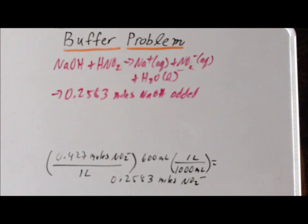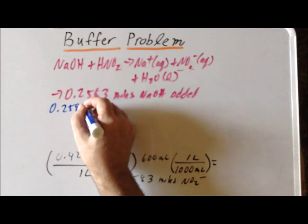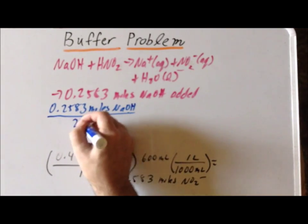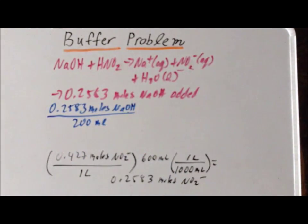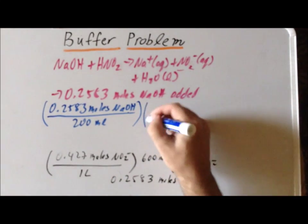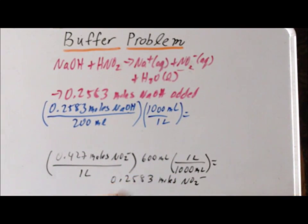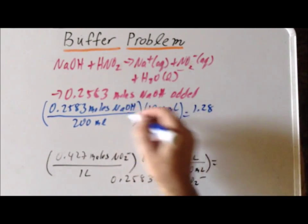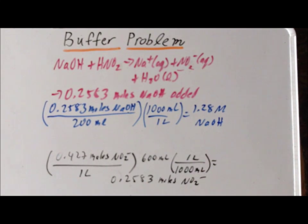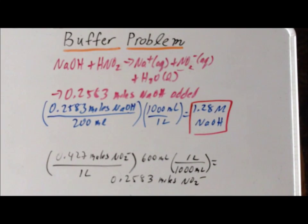Those 0.2583 moles of sodium hydroxide were contained in a solution with a volume of 200 milliliters. Dividing moles by volume and converting using 1000 milliliters per liter gives us 1.28 moles of sodium hydroxide per liter, which is simply 1.28 molar. Therefore, the initial concentration of the sodium hydroxide solution must have been 1.28 M. Thank you very much for your attention.